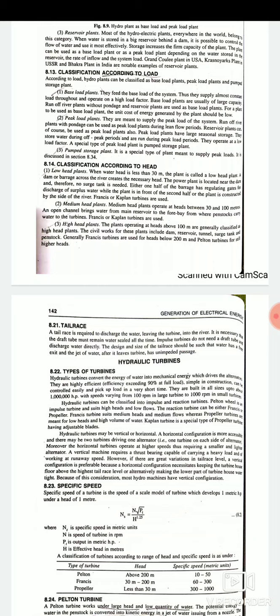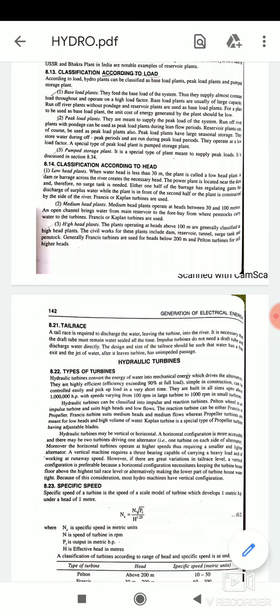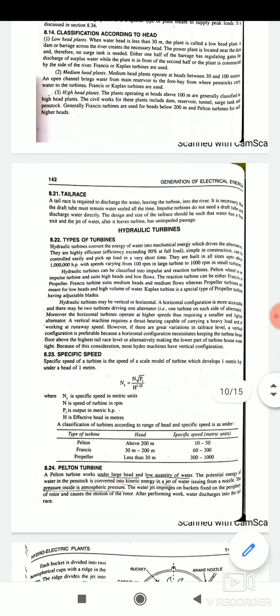Third one is high head plants. The plants operating at the heads above 100 meters, greater than 100 meters means the head height must be greater than 100 meters. Then that plant comes in the category of high head plants. The civil works for these plants include dam, reservoir, tunnel, surge tanks, and the penstocks. Generally Francis turbines are used for head below 200 meters and Pelton turbines used for higher than 200 meters. So this is all about the classification according to the head.